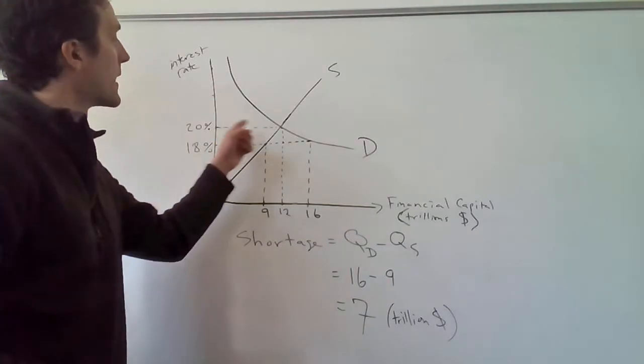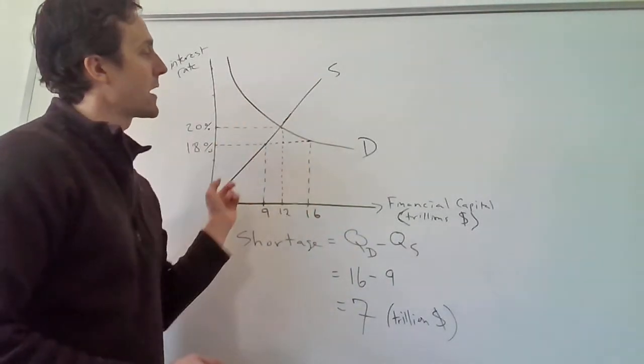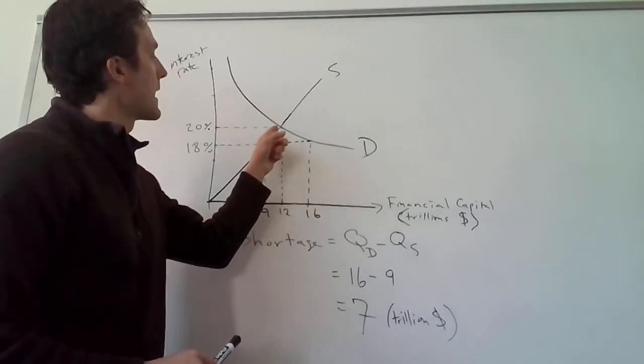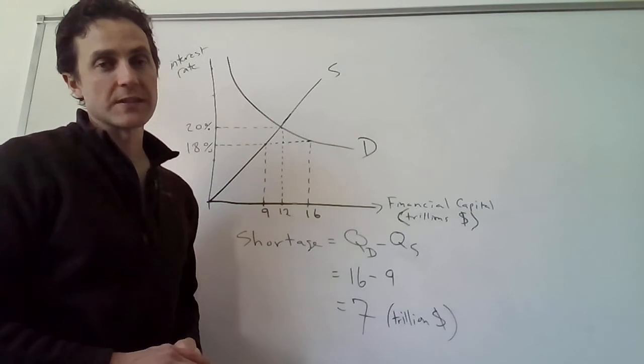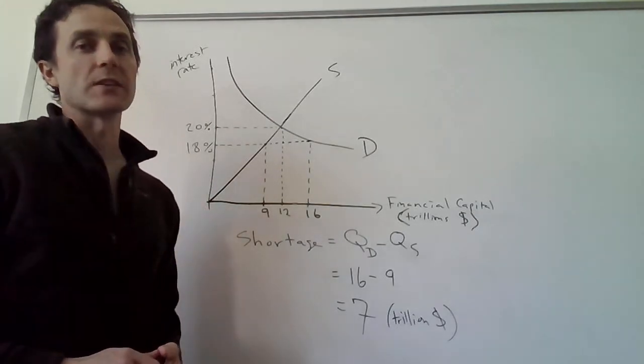We see here that where the demand for financial capital equals the supply of financial capital in this market, that happens at an interest rate of 20%. So 20% would be the equilibrium interest rate in this market.